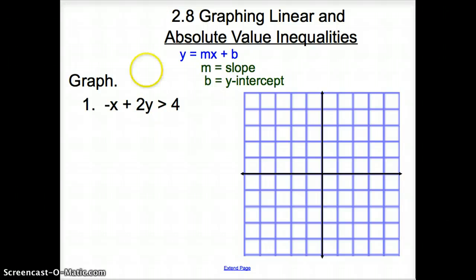So, what do we have to do? We have to add x over to the other side. So, we come up with 2y is greater than a positive x plus 4. Now, how do we get y by itself? We want to divide everything by 2. So, we're dividing this guy by 2 and this guy by 2.